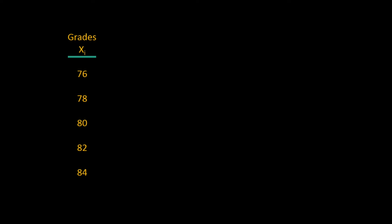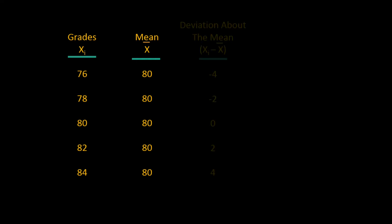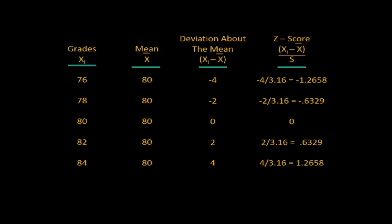To calculate the z-scores for our grade data, we can make a column of x-scores: 76, 78, 80, 82, and 84. In the second column, we put the mean x-bar of 80. In the third column, we write out the deviations about the mean — x subscript i minus x-bar. In the fourth column, we calculate the z-score by taking the numbers in the third column and dividing by s, the sample standard deviation. This gives us a standardized z-score for every x-score value.